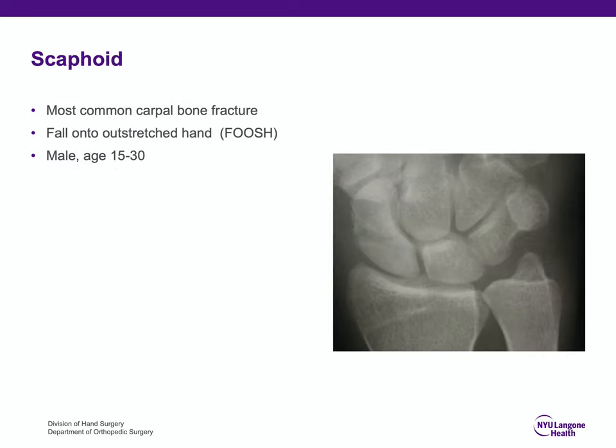I'd like to spend the remainder of the talk on scaphoid fractures, which is the most common carpal bone fracture. This is generally secondary to a FOOSH — fall onto outstretched hand. They commonly occur in young males aged 15 to 30. So if you see an elderly woman in the emergency room with thumb pain after injury, it's probably not a scaphoid fracture — I might consider thumb arthritis or a trapezial ridge fracture, but a scaphoid fracture is highly unlikely.